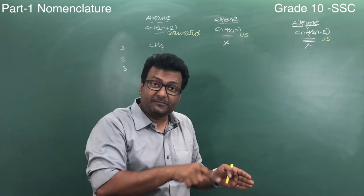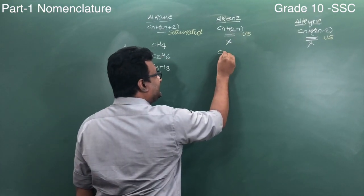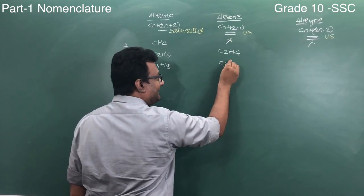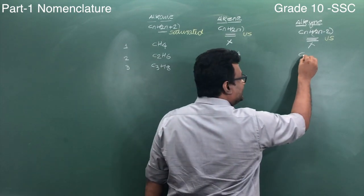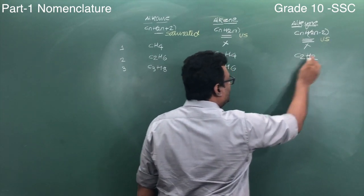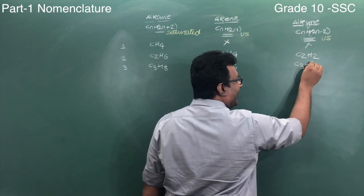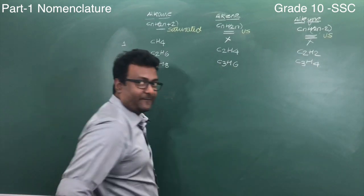I put 2 over here, what will I get? C2H4. I put 3 in this formula, what will I get? C3H6. What happens for alkyne? C2H2. What happens over here? C3H4. Got it? And so on till 10.